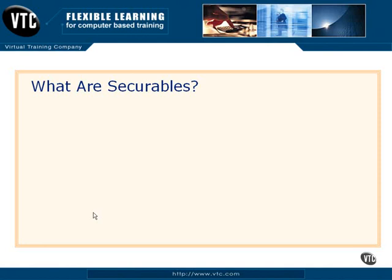The next portion of our security picture are the securables. What exactly is a securable? A securable is real simple — it's any object that can be accessed. If someone's going to need to access something to get information from it, to write information to it, or anything like that, then that is a securable object. It's something that needs to be secured.